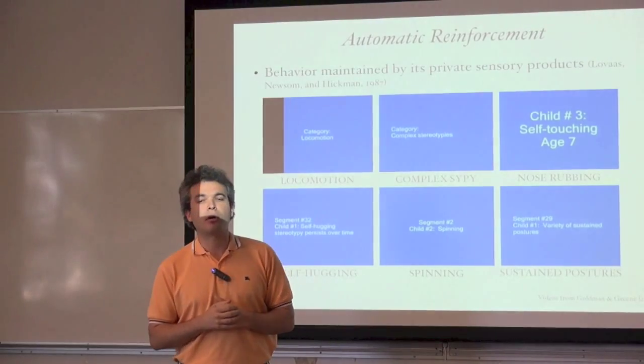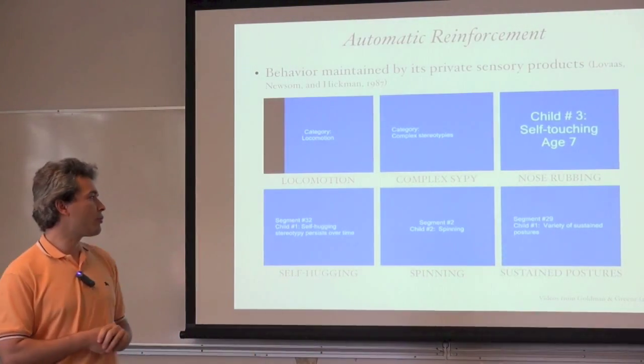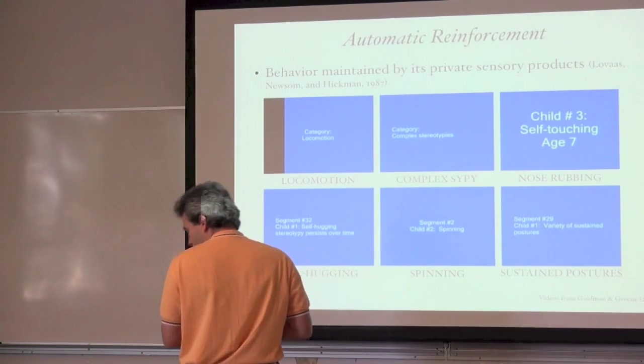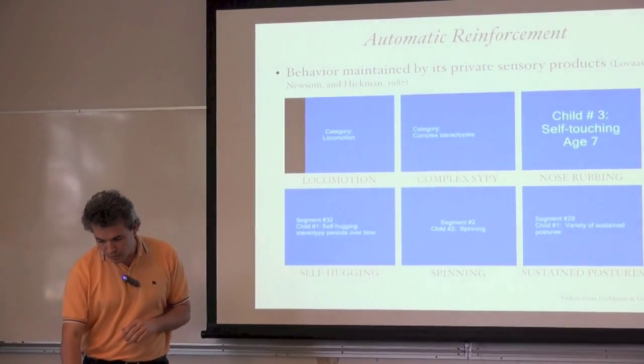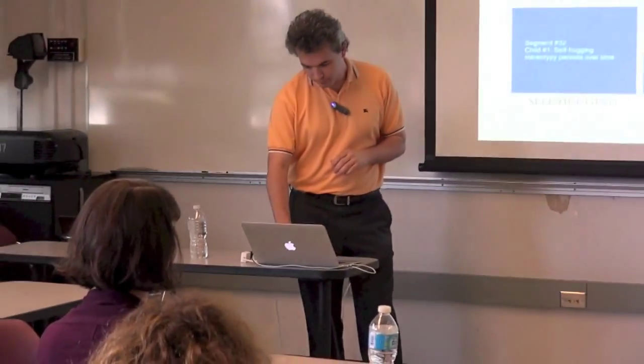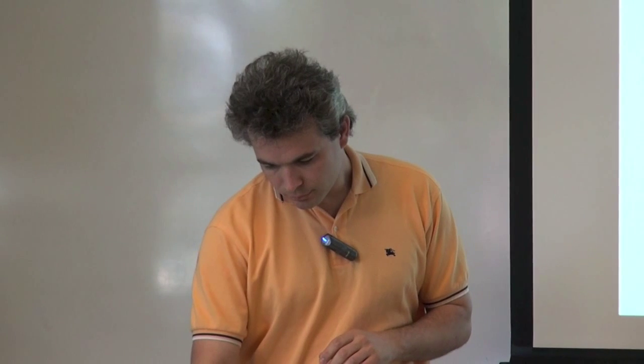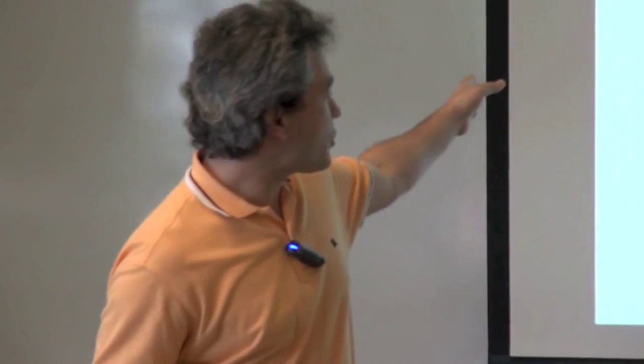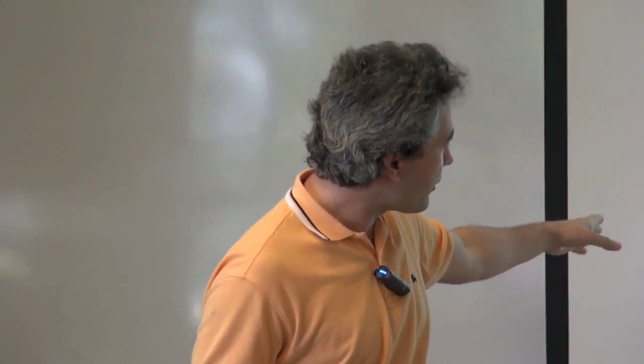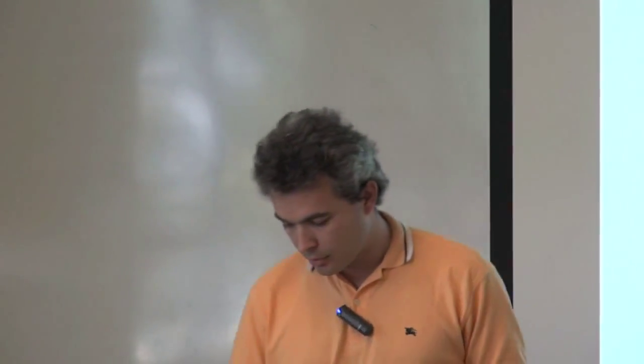There are specific forms of behavior known to be maintained by sensory feedback or automatic reinforcement in a very high percentage of cases. Examples include moderate and complex stereotypies in the form of locomotion, complex behavior with vocal and motor components, nose rubbing, self-hugging, spinning, and problem behavior in the form of sustaining postures for long periods of time. These are typical examples of behavior maintained by automatic reinforcement.